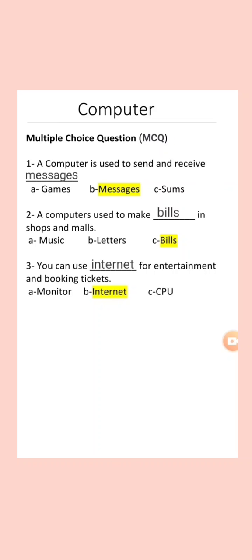Number A: a computer is used to send and receive dash. Options: A) Games, B) Messages, C) Sums. What is the right answer? Think about that. Yes — Messages. A computer is used to send and receive messages.